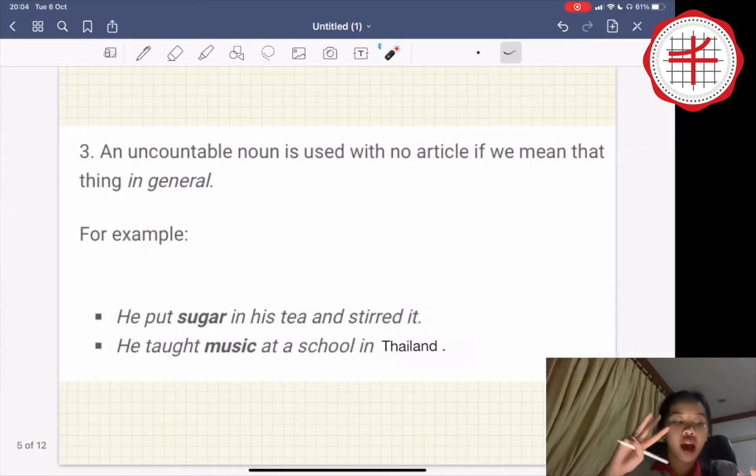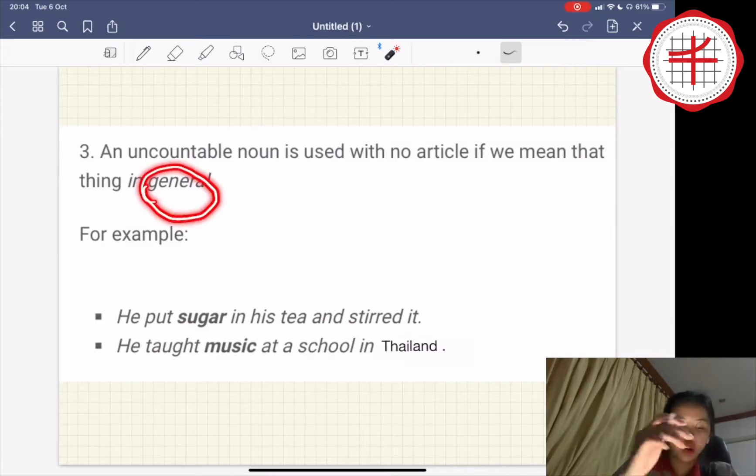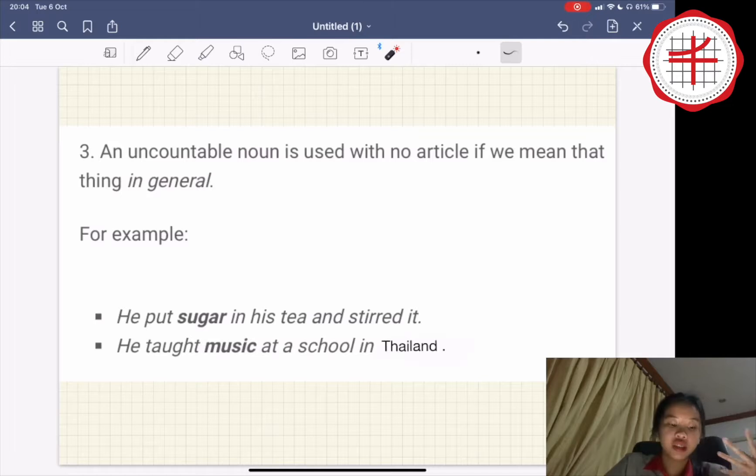And number three, an uncountable noun is used with no article if you mean that thing in general. For example, he put sugar in his tea and stirred it. He taught music at a school in Thailand, like this.